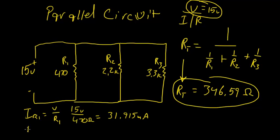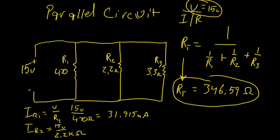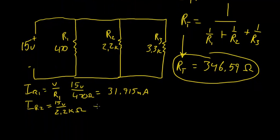Do the same thing for IR2. 15 volts over 2.2 kilo ohms. And then that gives us 6.818 milliamps. And IR3, again, 15 volts. And our resistance was 3.3 kilo ohms. And that gives us 4.545 milliamps.